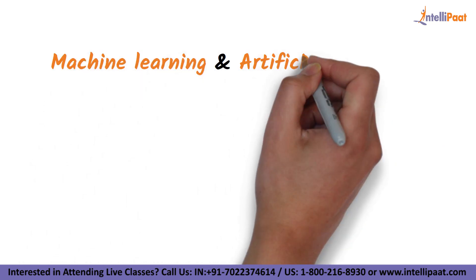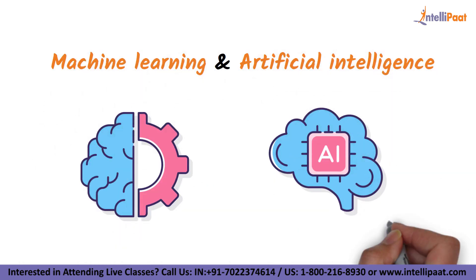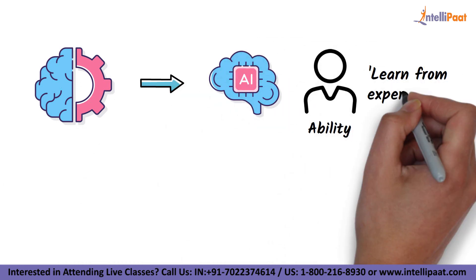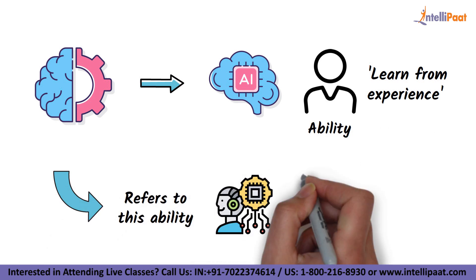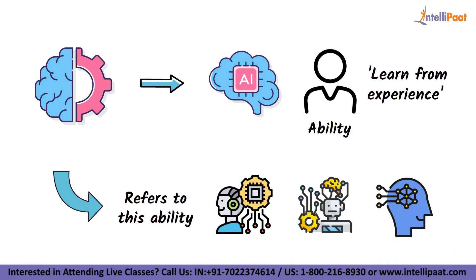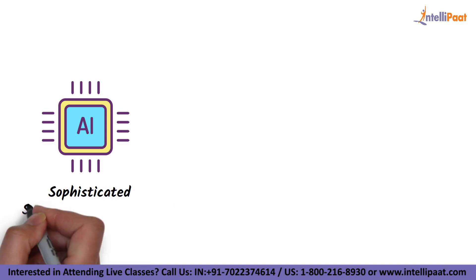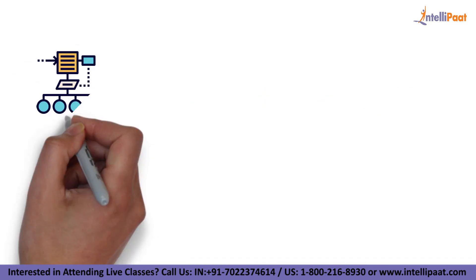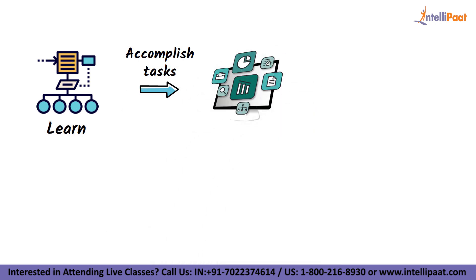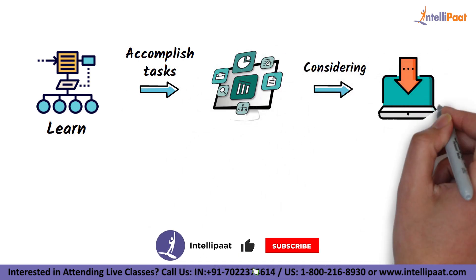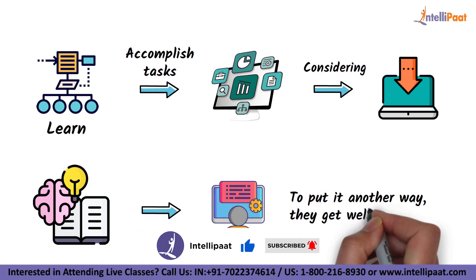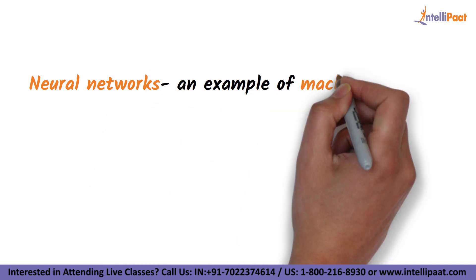Let's see how machine learning and artificial intelligence go hand in hand. Machine learning is a part of AI. Humans have the ability to learn from experience, and the term machine learning refers to this ability when it exists in machines. Artificial intelligence is a set of sophisticated software technologies that allow computers to think and act like humans. The neural network algorithms learn to accomplish tasks by evaluating and considering fresh inputs. They acquire knowledge without being programmed to do so — in other words, they improve on their own. Neural networks are an example of machine learning.